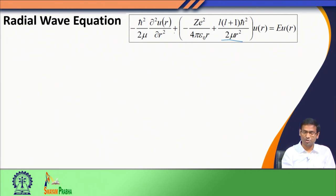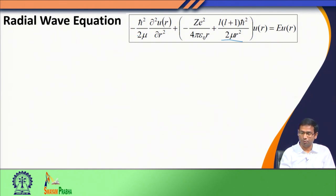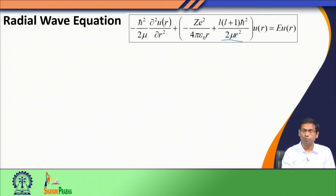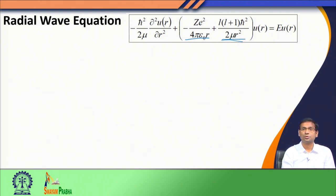This wave equation has now become a radial wave equation, because we have taken care of the angular part by applying the angular operator — the Legendrian — to the angular component of the total wave function. The hydrogen atom's Schrödinger equation has been converted to a new radial wave equation with an effective potential containing a Coulombic potential and a centrifugal potential. Together, these two potentials provide stability to the hydrogen atom. We now continue our discussion on how to solve this radial wave equation.